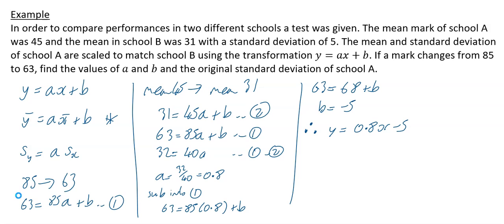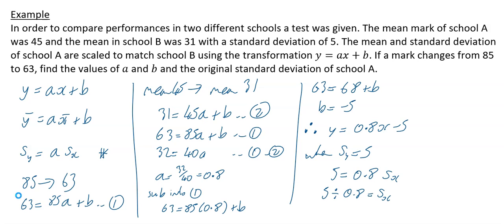We've found a = 0.8 and b = −5. Now to find the original standard deviation of school A: school A is scaled so that s_y = 5. Using s_y = a · sₓ, we get 5 = 0.8 × sₓ, so sₓ = 5 ÷ 0.8 = 6.25.